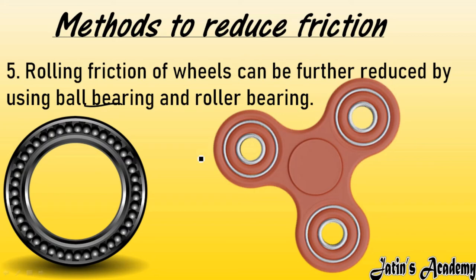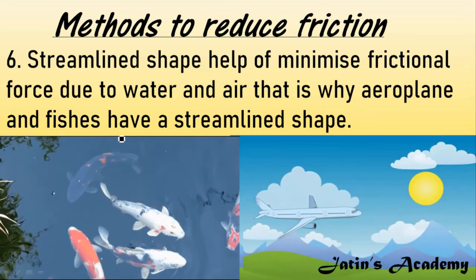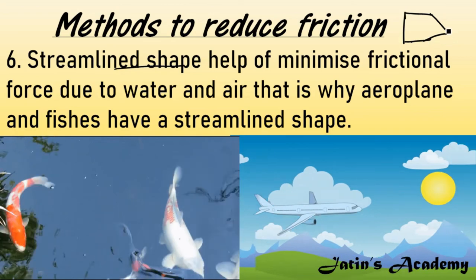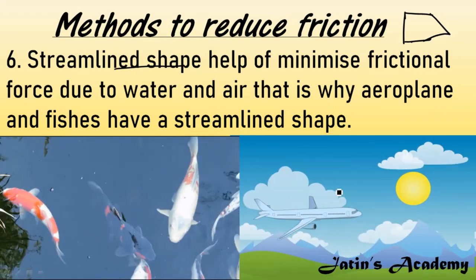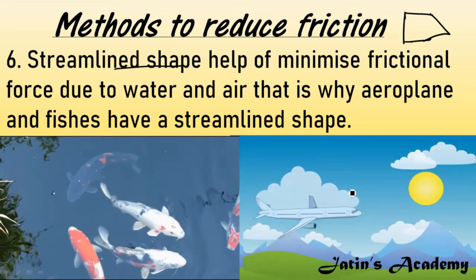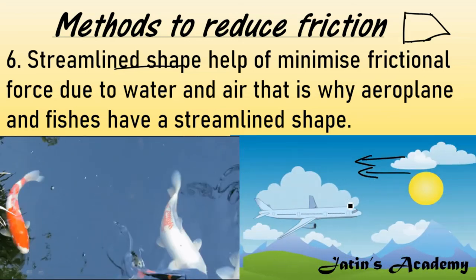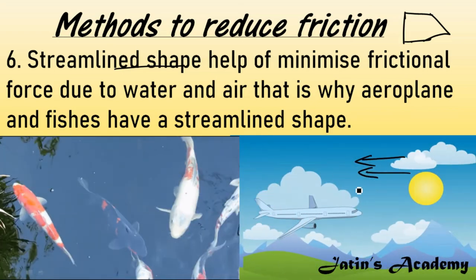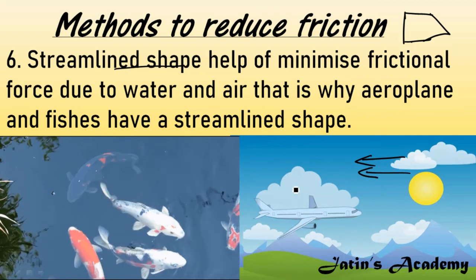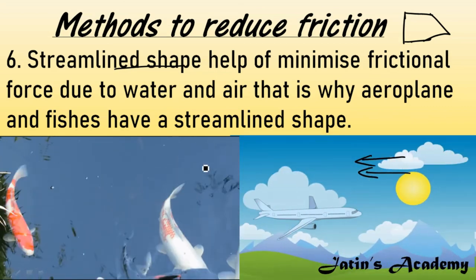Sixth method to reduce friction: streamlined shape. Some bodies are made in a streamlined shape — broad at the back and narrower at the front, like a fish or aeroplane. When a plane moves through air, air exerts frictional force on it and slows it down. The streamlined shape cuts through air particles and reduces this friction, allowing the plane to move easily. That is why streamlined shapes are used in various bodies to reduce friction.